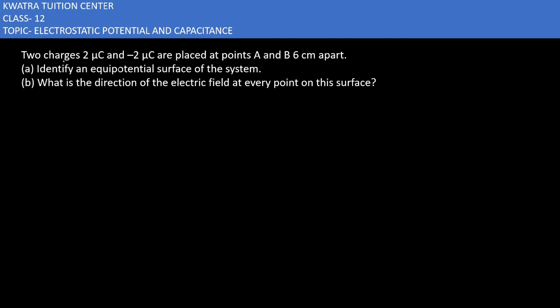Starting with the third part here, it says two charges 2 µC and -2 µC are placed at point A and B, 6 centimeters apart. Now we have two charges given: one is 2 µC and the other is -2 µC. We have one point A and the other point B, and the distance apart is 6 centimeters, which is nothing but 0.06 meters.